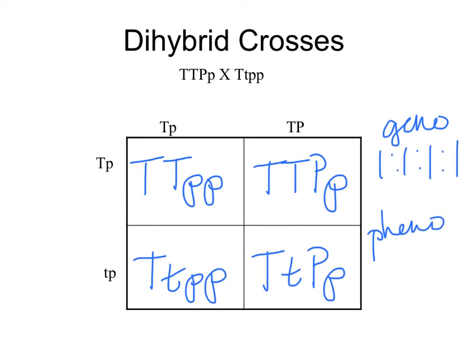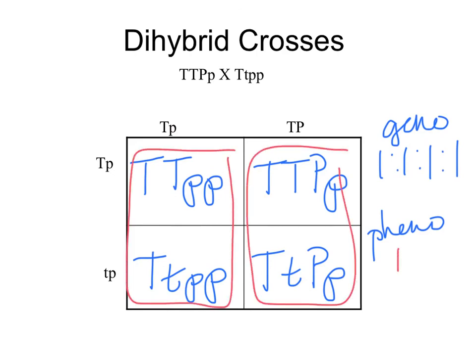What about phenotype? We don't know exactly what the letters stand for, but assuming tall is dominant and purple is dominant. Which ones would be tall? All of them. Which ones would be purple? Two of them. Which ones would be white? Two of them. Together: two are tall white, two are tall purple. So our phenotype ratio is only one to one — half tall white, half tall purple. Make sure you're answering for genotype or phenotype, because they're not the same. Most of the time they're not. And there you have it — that's making gametes and doing dihybrid crosses.